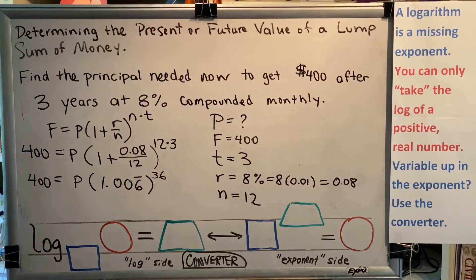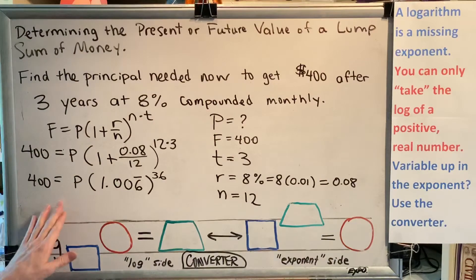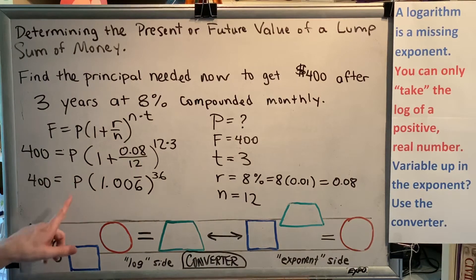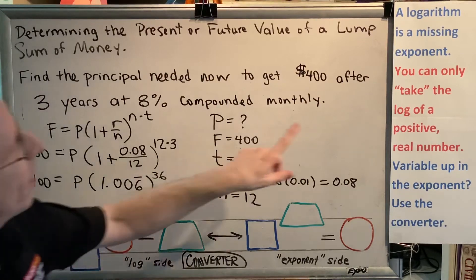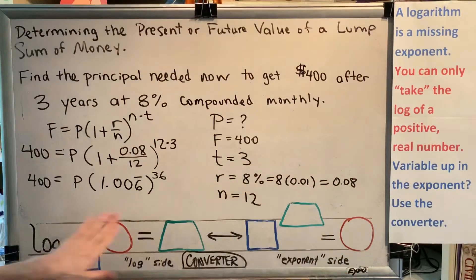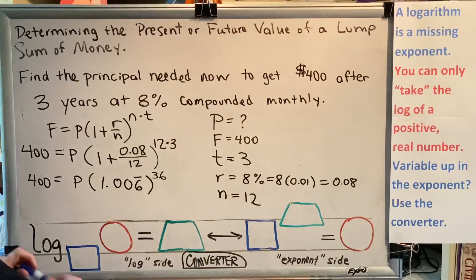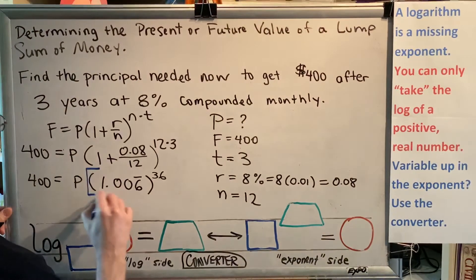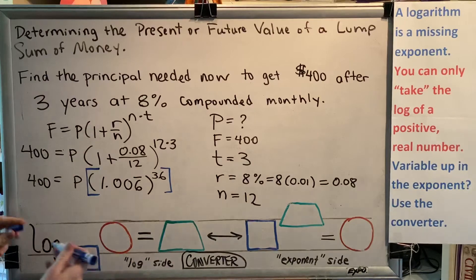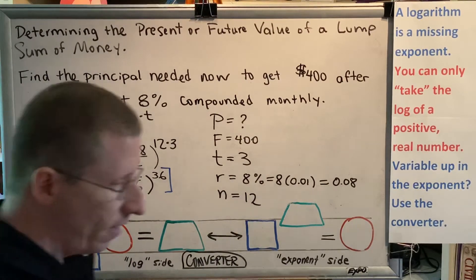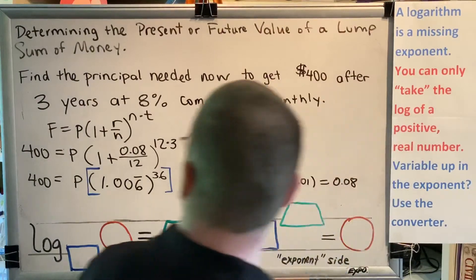So now I have to make a decision. How do I solve for P? Well, in this particular instance, I note that P is not up in the exponent. So I do not use my converter. Instead, I notice that P is being multiplied by this particular exponential value.